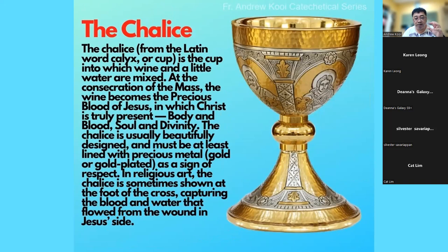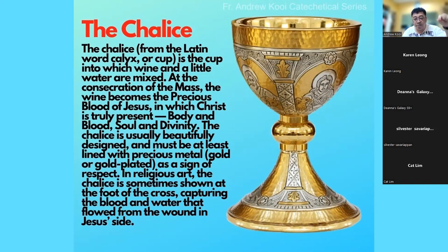On top of the corporal you will have what we call a chalice, which is used to store the blood of Christ — or the wine which will later be consecrated into the blood of Christ. Some chalices are very elaborate and some are more simple. The chalice is supposed to be made out of precious metal. Some chalices are made out of wood; however, the inside should be lined with precious metal, because if you use plain wood the blood of Christ may seep into it. A chalice should be blessed before it is used during Mass.